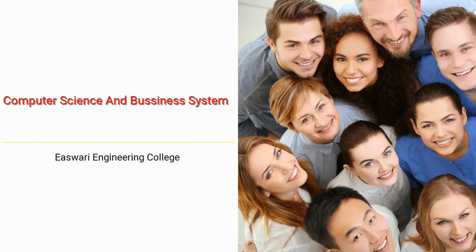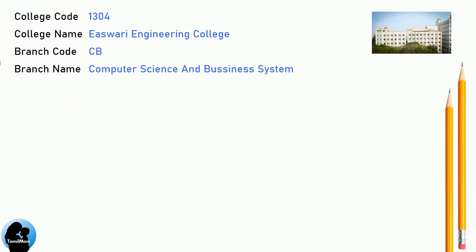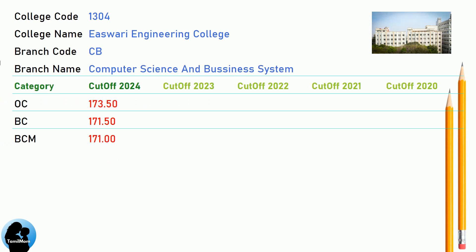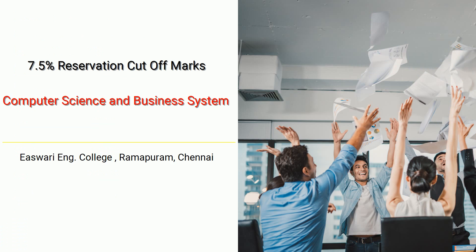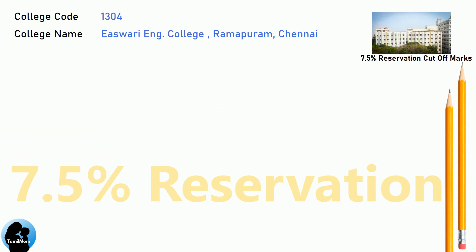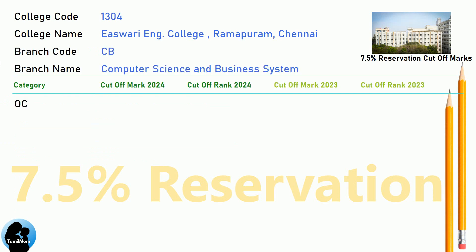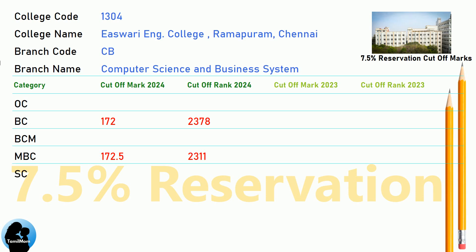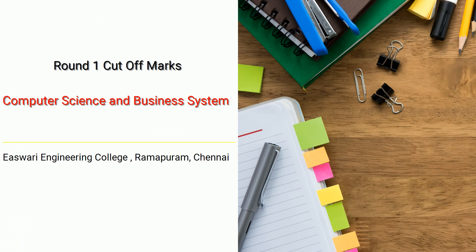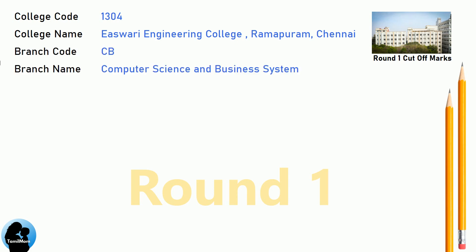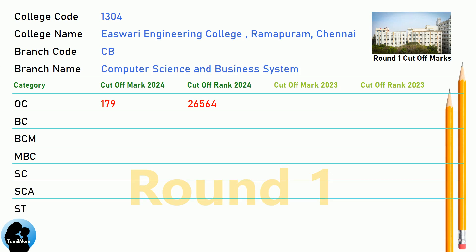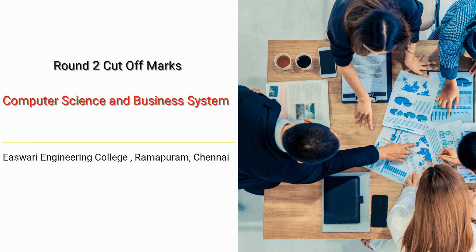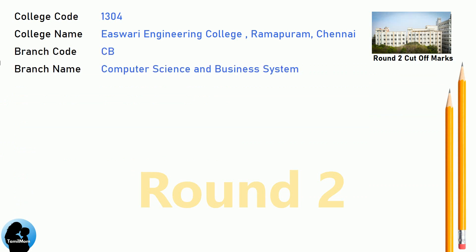DNA Cut-Off for Eshwari Engineering College in Computer Science and Business System. DNA 7.5 Reservation Cut-Off for Eshwari Engineering College in Computer Science and Business System. DNA Round 1 Cut-Off and DNA Round 2 Cut-Off for Eshwari Engineering College in Computer Science and Business System.